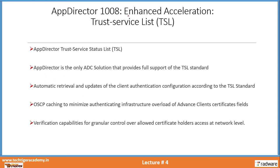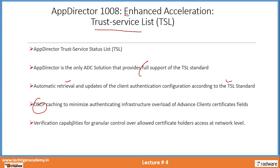Another feature in enhanced acceleration is trust service list. AppDirector is the only ADC solution that provides full support of the TTSL standard, including automatic retrieval and update of client authentication configuration according to the TSL standard. It also supports OCSP — Open Server Certificate Protocol — for certificate caching to minimize authentication infrastructure overload, along with advanced client certificate verification capabilities for granular control over allowed certificate holders' access at network level.